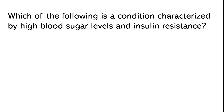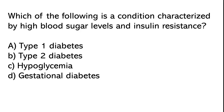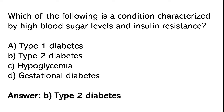Which of the following is a condition characterized by high blood sugar levels and insulin resistance? Type 1 diabetes, Type 2 diabetes, hypoglycemia, gestational diabetes. The correct answer is option B: Type 2 diabetes.